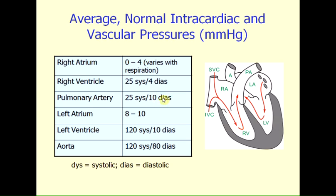So the pulmonary arterial pressure remains somewhat elevated at about 10 millimeters of mercury. The left atrial pressure is about 8 to 10 millimeters of mercury, so it is significantly greater than the right atrial pressure.